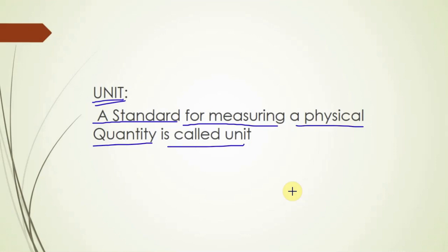If we have a kg, it will be easy to use. If we have a unit, it is standard. Unit is nothing but a standard for measuring a physical quantity. For example, milk — you can define a unit. That means, unit is a standard for measuring a physical quantity. It is called unit.